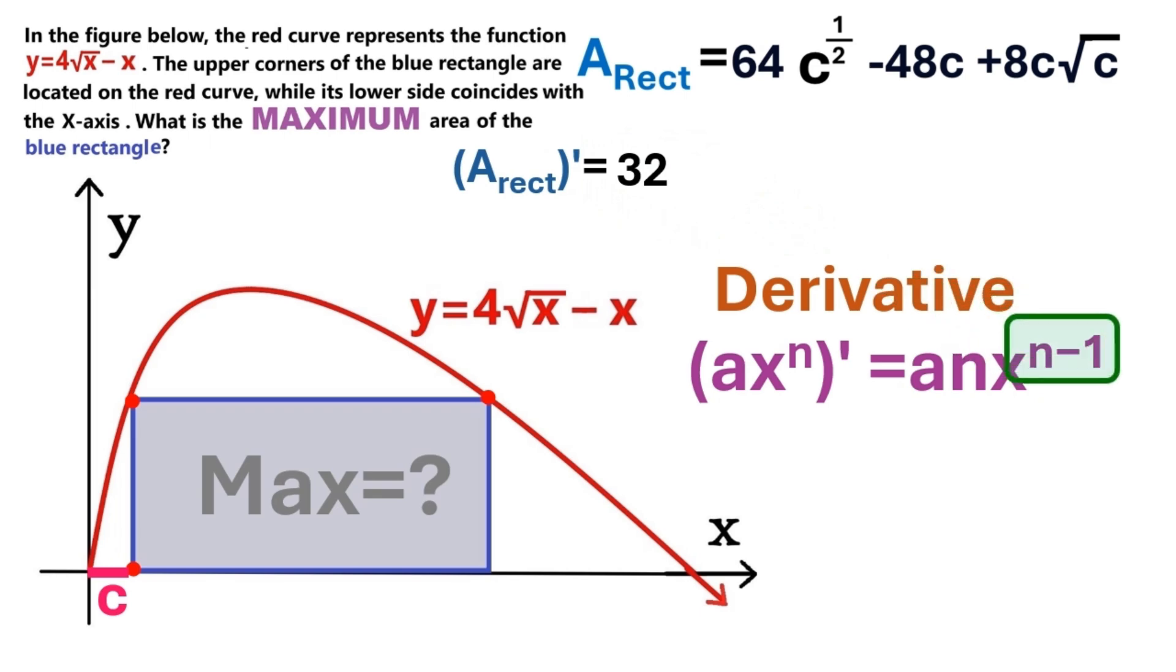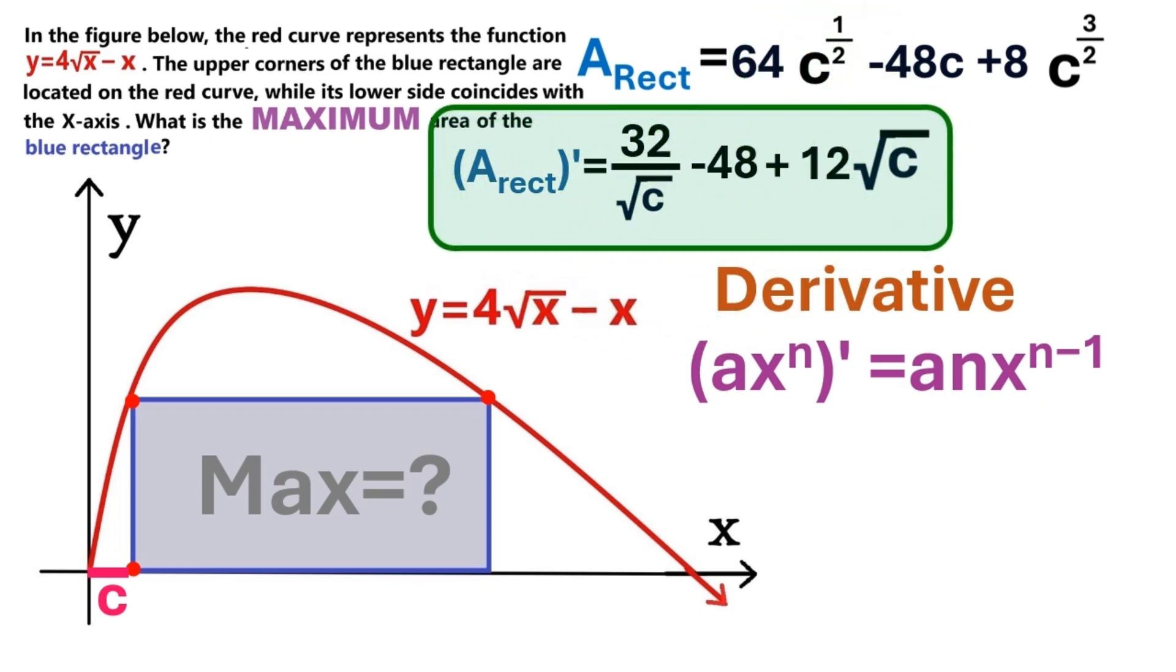The power rule tells us to reduce the power by 1. So it's gonna be C to the power of the quantity 1 over 2 minus 1. It becomes C to the power of minus 1 over 2, which we can rewrite like this. Now let's take a look at this. This is essentially C to the power of 1. So we can just go ahead and put minus 48 here. Because C to the power of 0 is 1. And in this final term, C times root C equals C to the power of 3 over 2. So we multiply 8 by 3 over 2, which is 12. And we subtract 1 from the exponent of C, which gives us C to the power of 1 over 2, which equals the square root of C. So here is the derivative of the area of the blue rectangle.